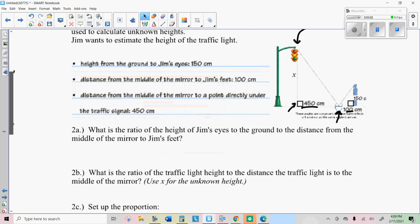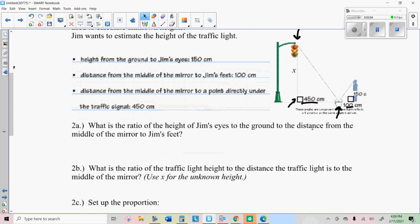So if you look closely, you'll see two similar triangles there. So what is the ratio of Jim's eyes to the ground to the distance from the middle of the mirror to Jim's feet? And that would be one fifty. That's how high his eyes are. And then the distance to the mirror is one hundred. So we got both those from the small triangle.